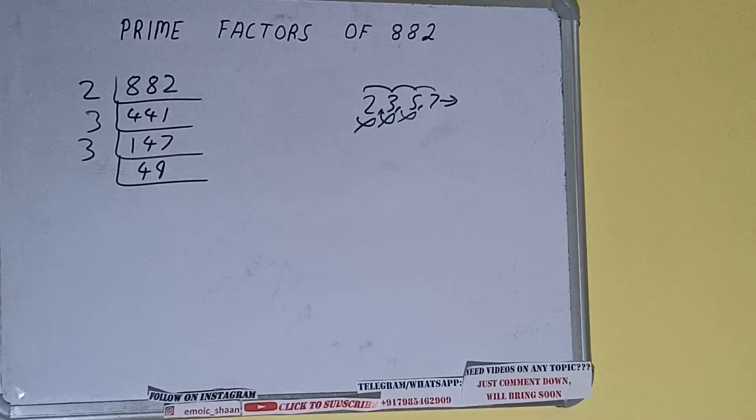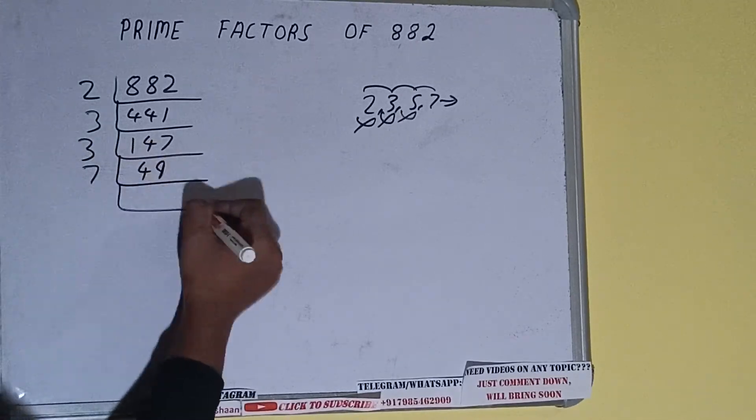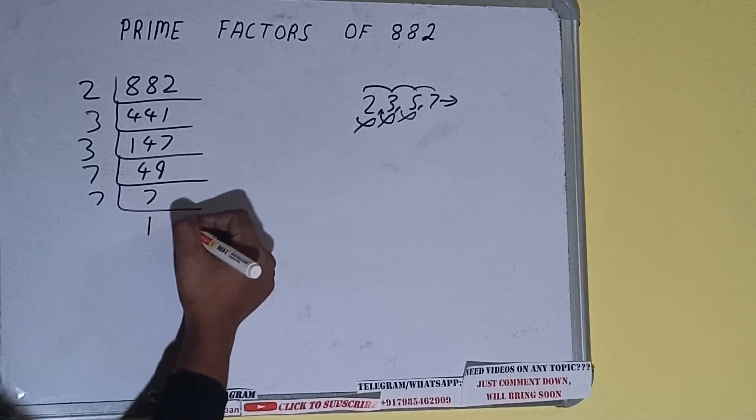With 7 it is divisible. So let's divide and we'll be having 7. 7 is again divisible by 7. We'll be having 1.